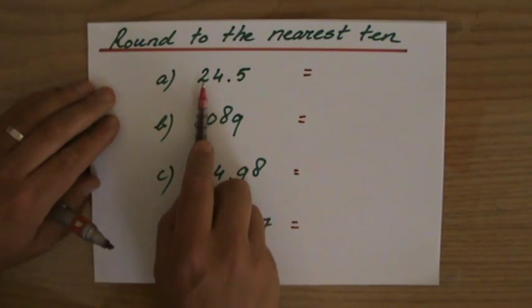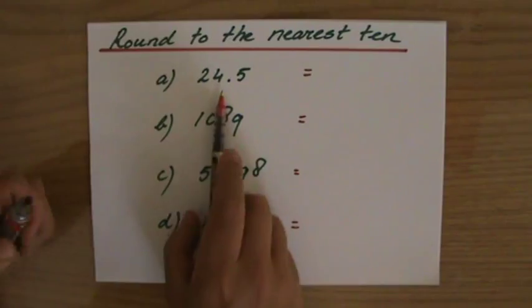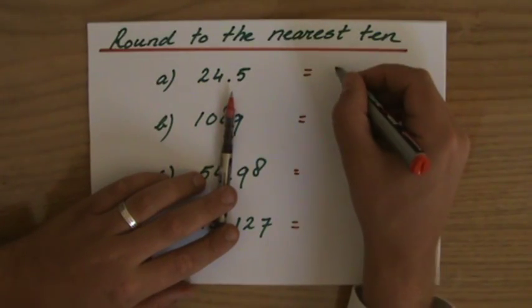And that depends only on the next number. If it's a 5 or higher, the 2 goes to a 3. If it's lower than a 5, it stays a 2. Well, 4 is lower than a 5, so this to the nearest ten is 20.